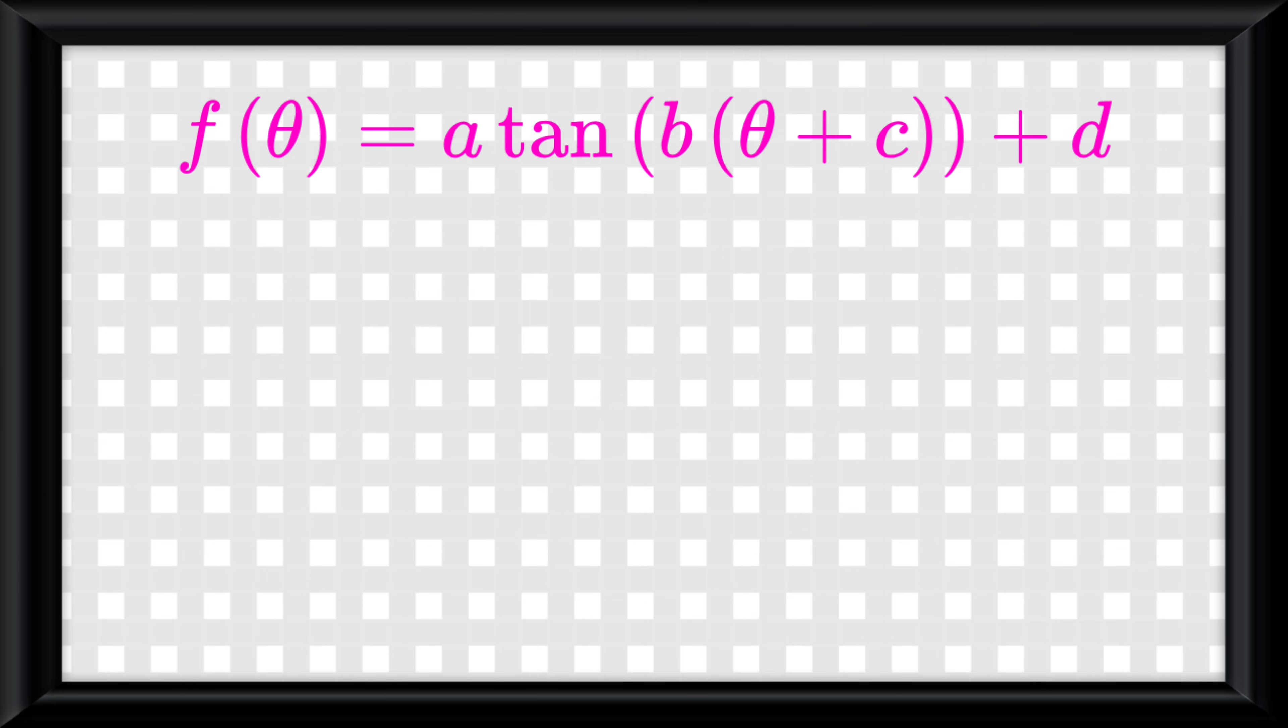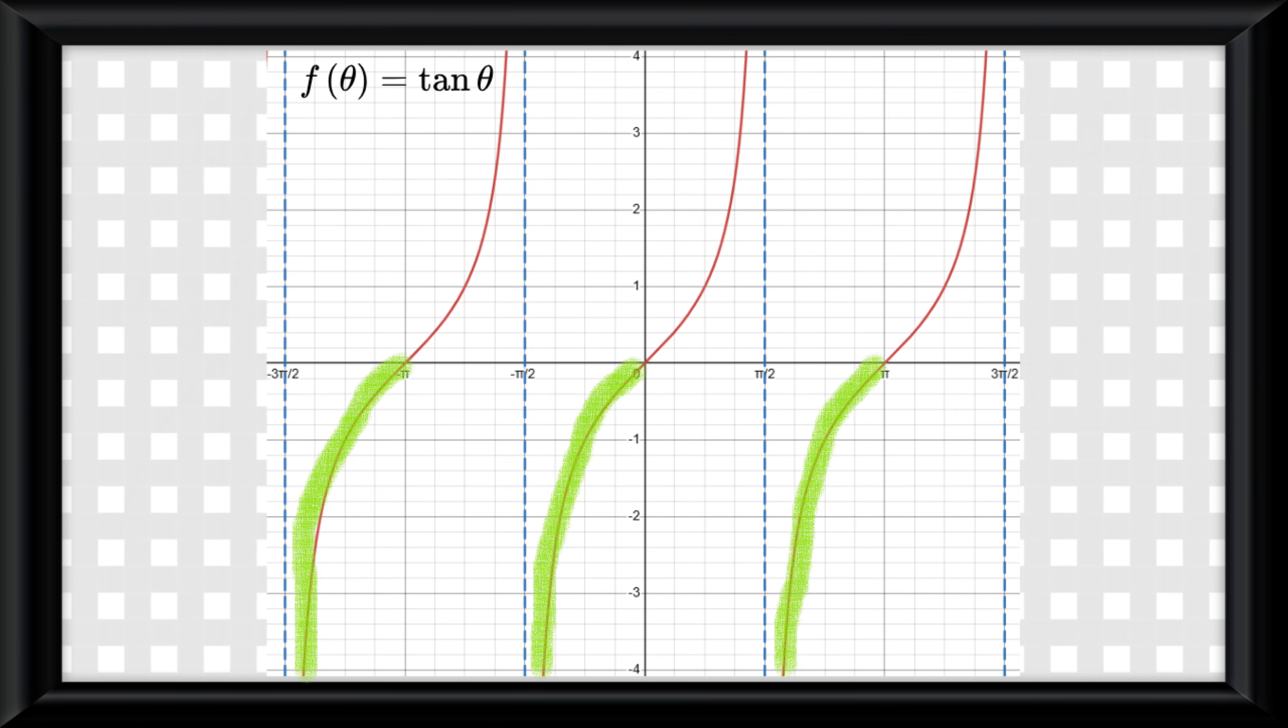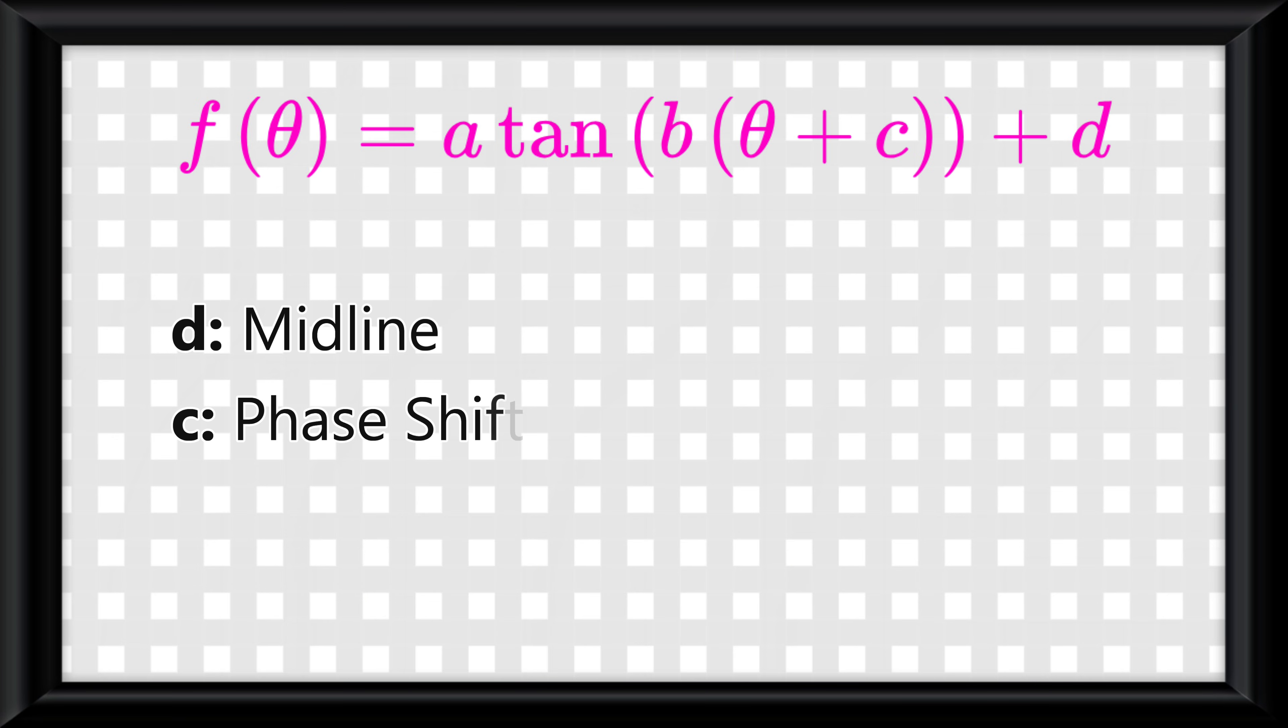The skeleton equation is basically the same from sinusoidal functions. D is your midline. You'll notice the graph changes from concave down to concave up once it passes the midline. C is your phase shift.